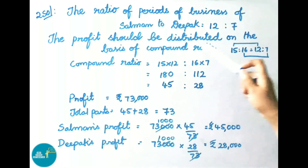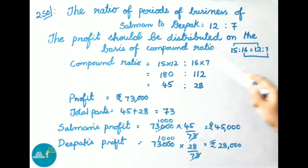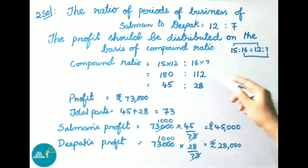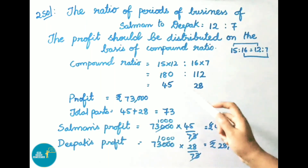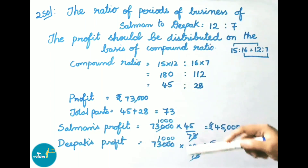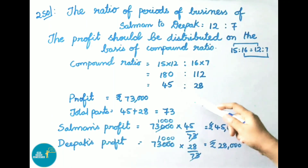The profit should be distributed on the basis of compound ratio. The previous ratio is 15 is to 16 and this ratio is 12 is to 7. Using compound ratio formula A into C to B into D, that is 15 into 12 is to 16 into 7, giving 180 is to 112. Dividing both terms by 4, the compound ratio is 45 is to 28.